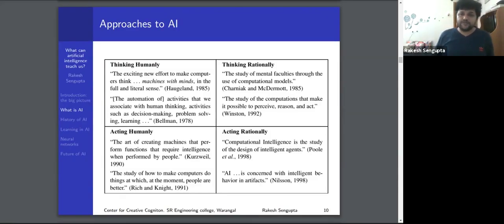There are different approaches to artificial intelligence. This table is taken from one of the classic textbooks of AI by Russell and Norvig. There are four kinds of approaches. He makes a distinction between thinking humanly versus thinking rationally and acting humanly versus acting rationally.